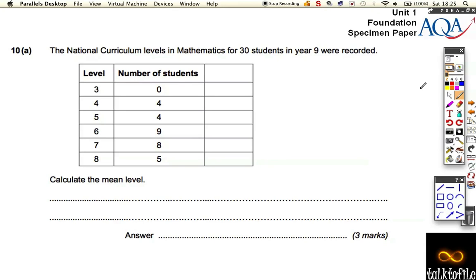Okay, so question number 10, it's the last question on the paper, it's quite a big one, it's got 5, 6 marks overall. It says the national curriculum levels in mathematics of 30 students in year 9 were recorded like this. It asks us to calculate the mean.